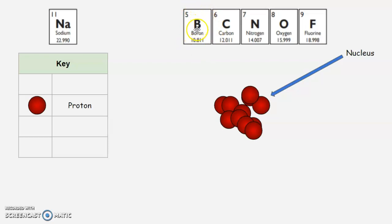So here's the box for boron. And you look at the smaller of the two numbers. So up here, you would know you have five protons for boron, six for carbon, seven for nitrogen, eight for oxygen, and nine for fluorine.